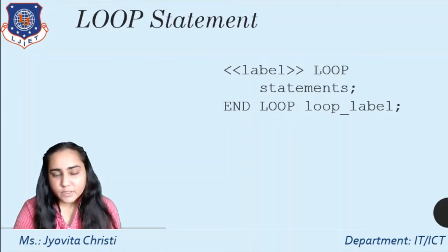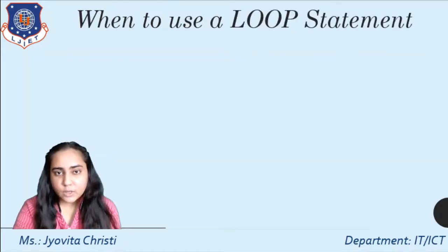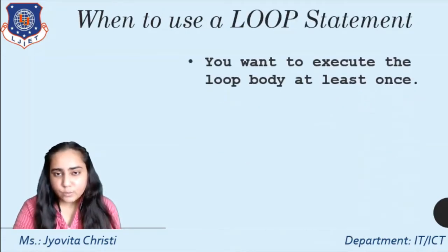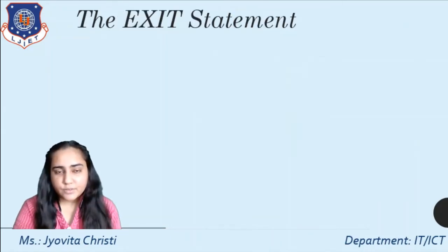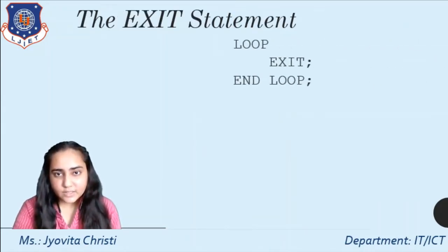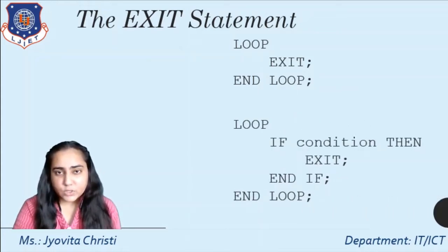The loop statement can have an optional label that appears at the beginning and the end of the statement. It is good practice to use the loop statement when you want to execute the loop body at least once and you are not sure of the number of times you want to execute it. The exit statement allows you to unconditionally exit the current iteration of a loop, typically used with an if statement to terminate a loop when a condition is met.